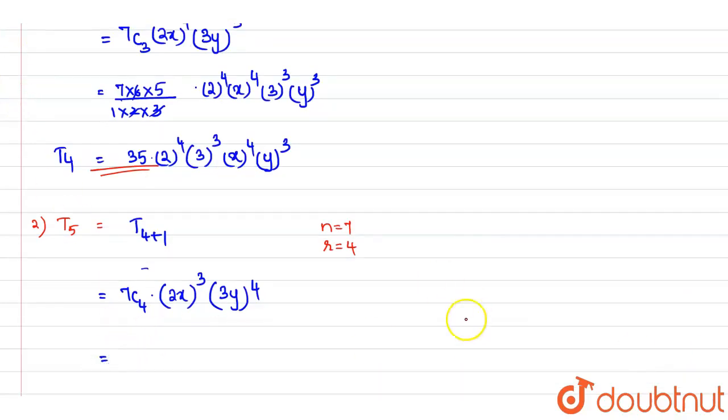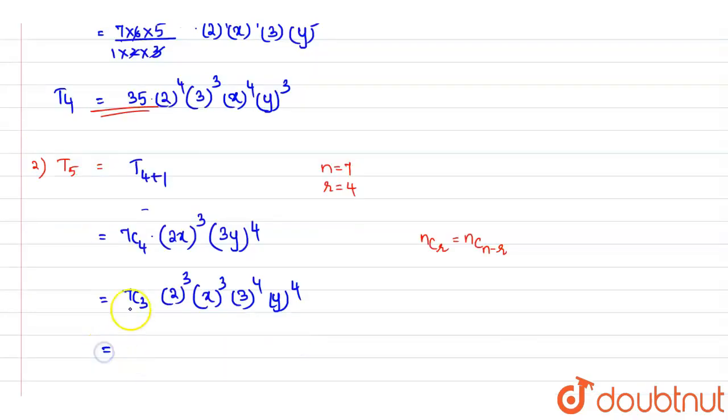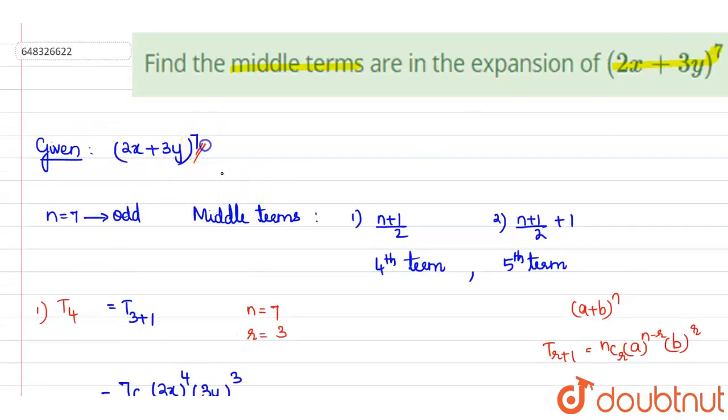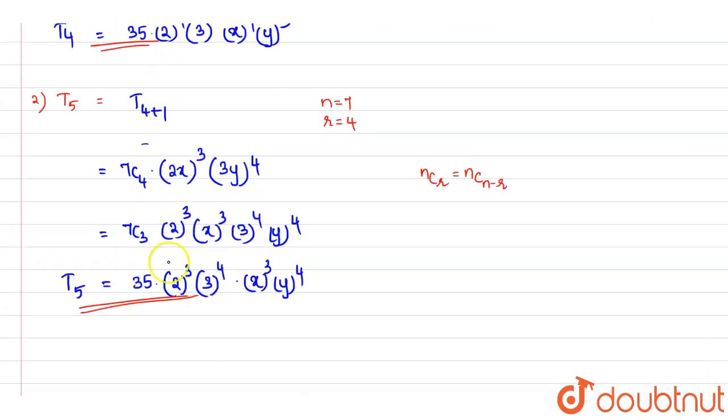Now we know nCr is the same as nC(n-r). Therefore, 7C4 is the same as 7C3 × 2^3 × x^3 × 3^4 × y^4. This is equal to 7C3, we have already found the value, it is 35 × 2^3 × 3^4 × x^3 × y^4. This is the expansion of T5. So we have found out two middle terms in this case since n is an odd number. So t4 and t5 is the answer here.